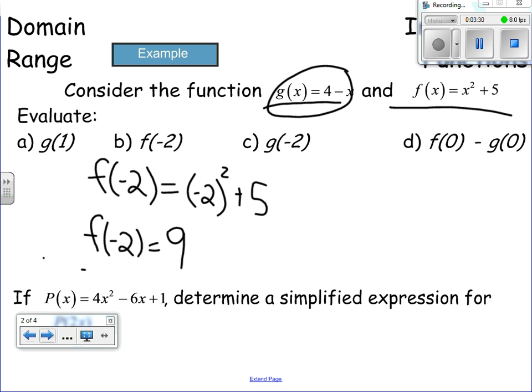On your own, try g of negative 2. What'd you get? Six. Yeah. You should have got 4 minus negative 2. Those negatives should have cancelled each other out. So it should have become 4 plus 2. G of negative 2 should have given you 6. Wonderful.